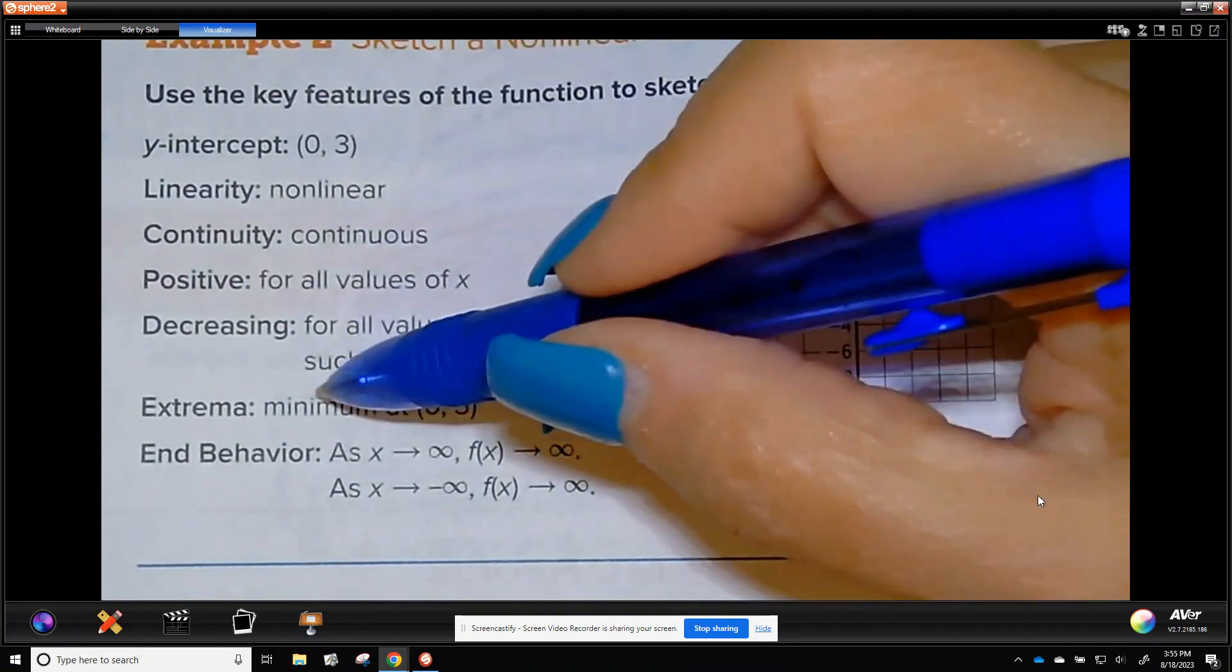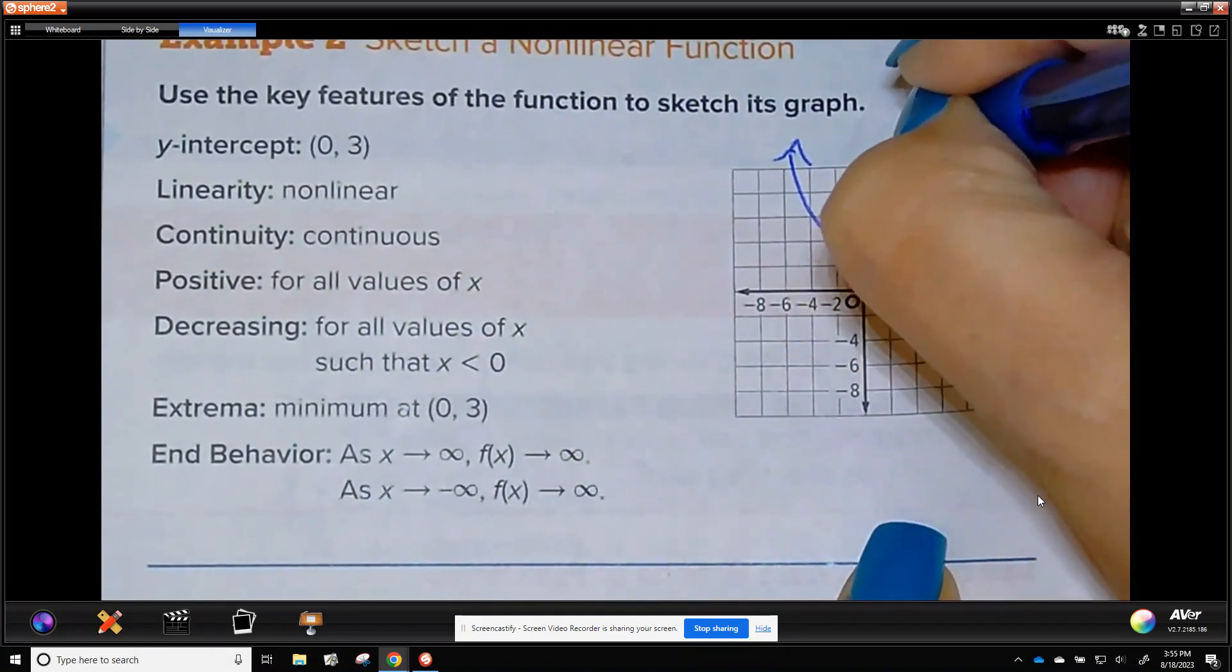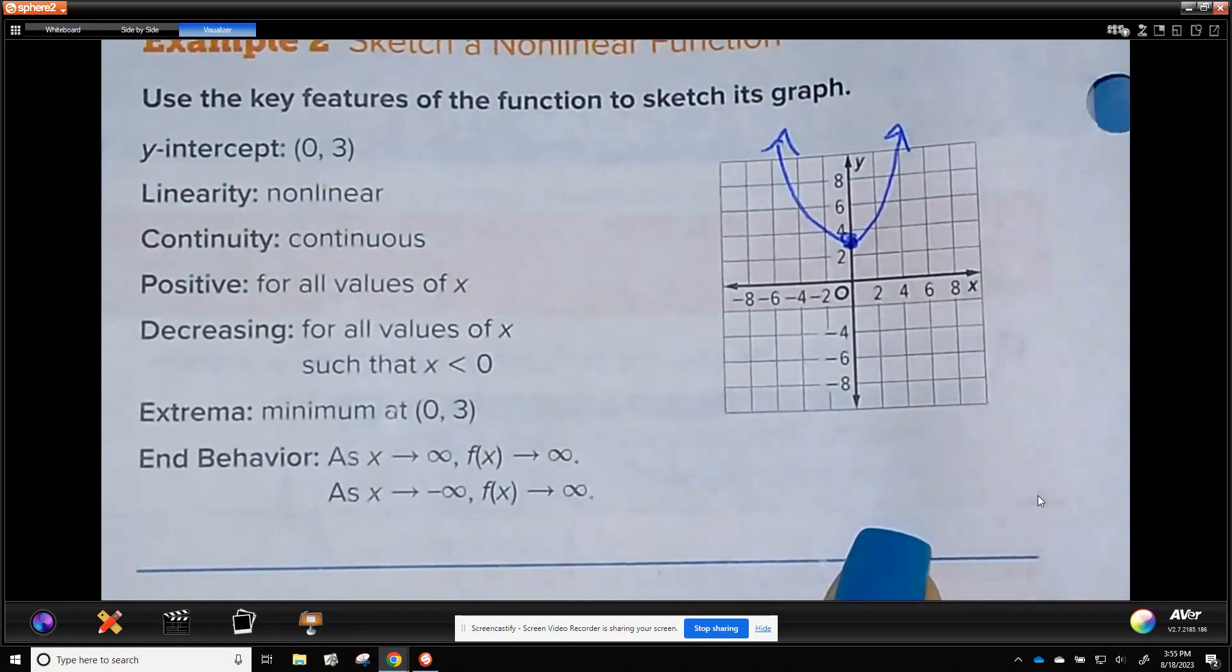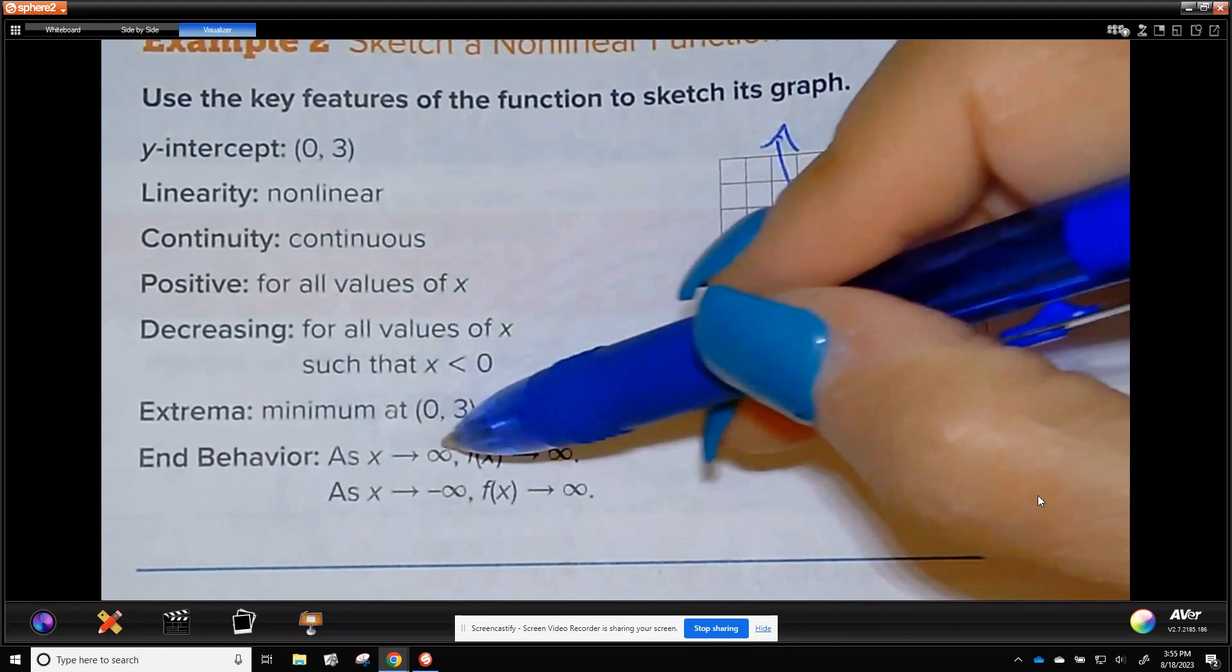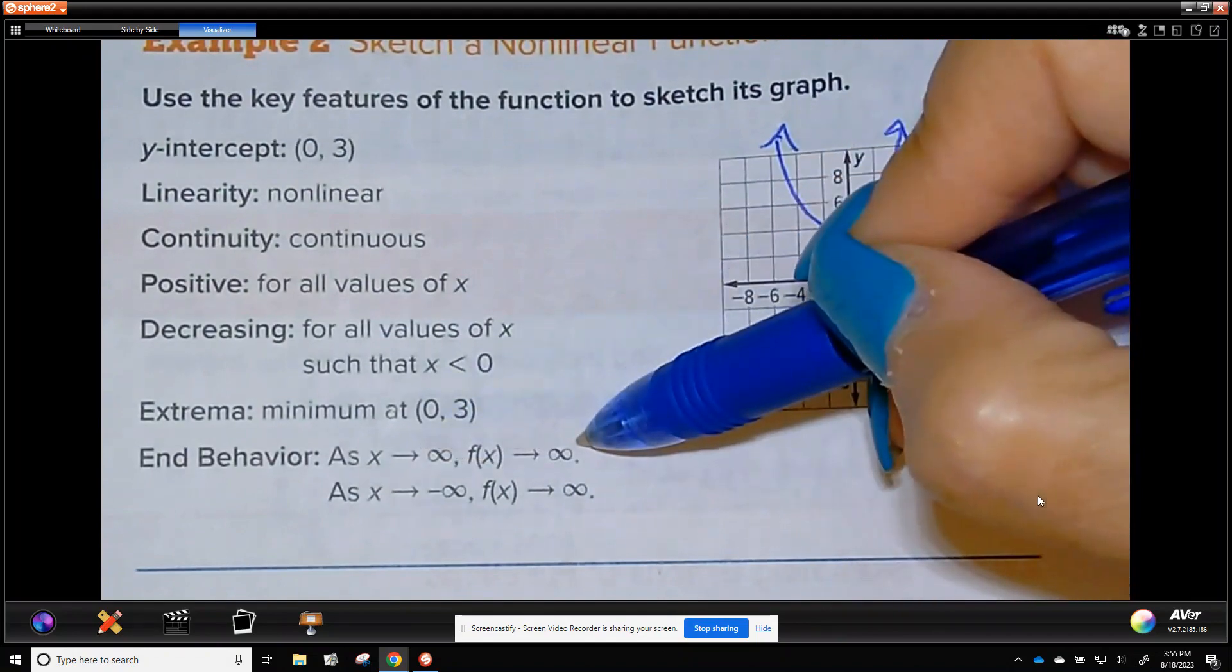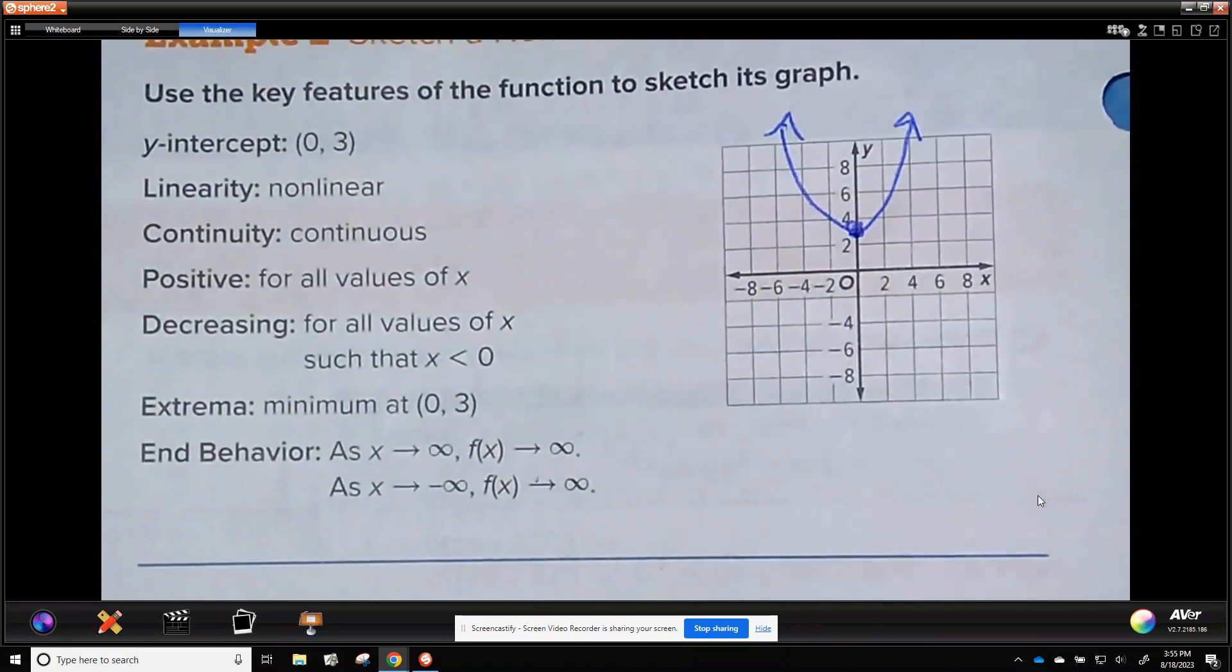It has a minimum at 0, 3. So since this is a minimum I know this right side is going up. So there's my minimum. It's all positive. The right side is going up. The left side is going up. So looks like it is a parabola.